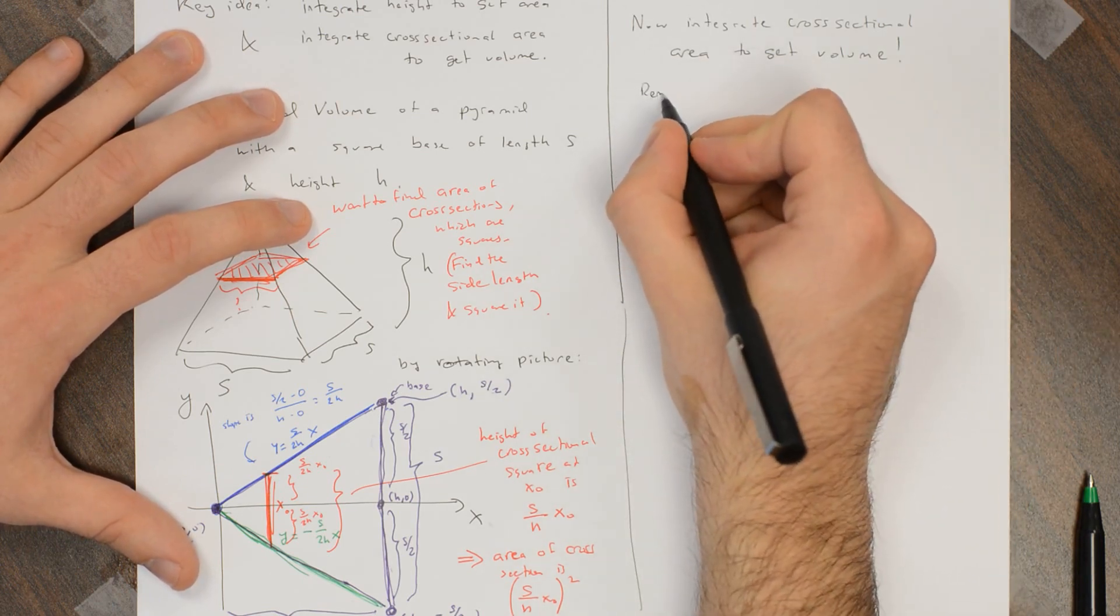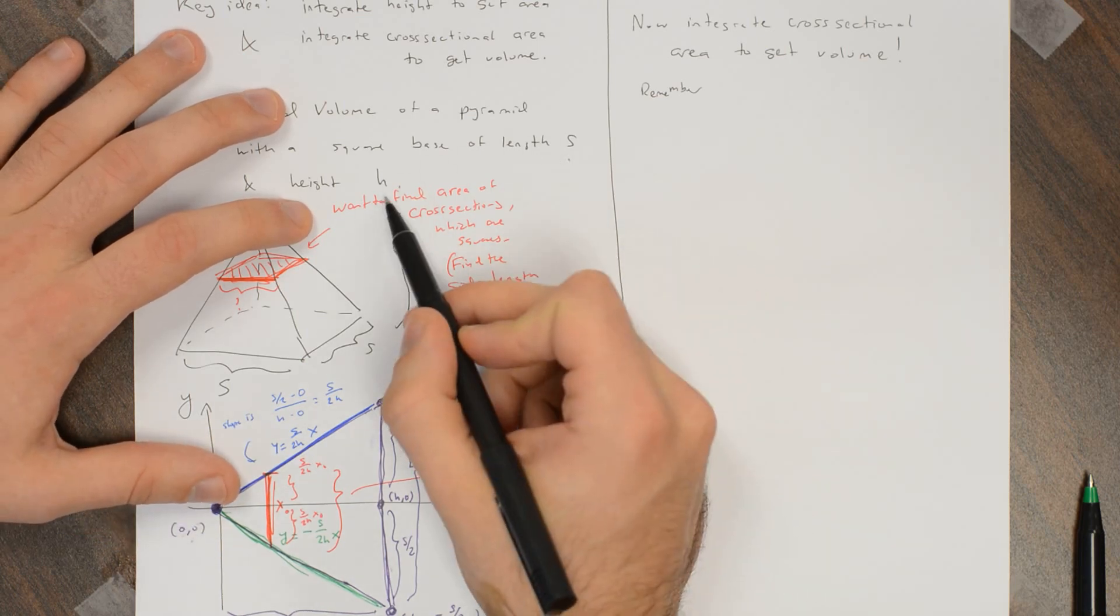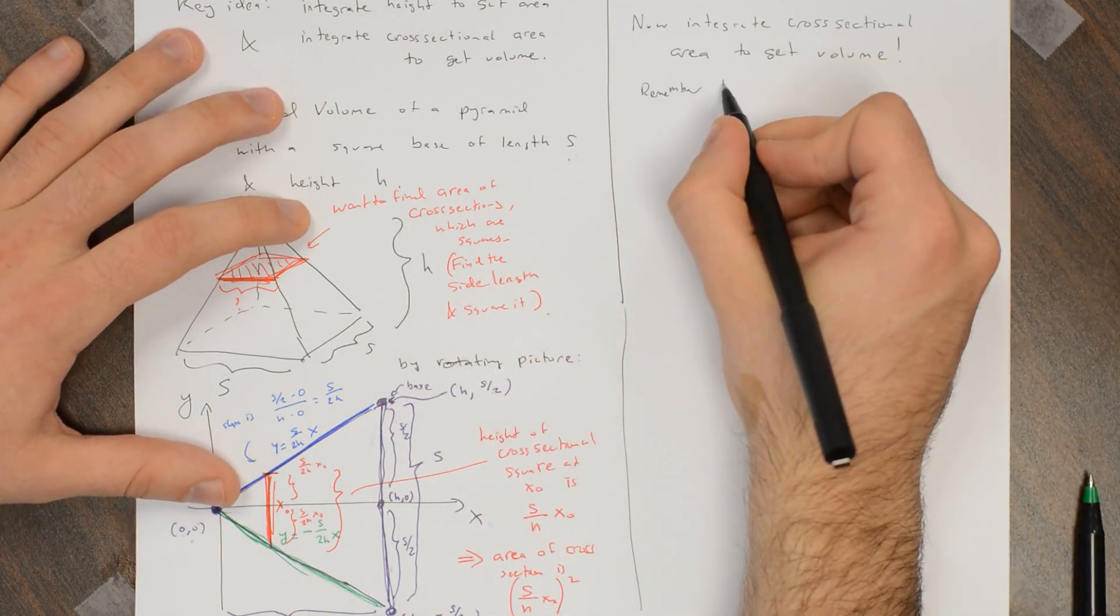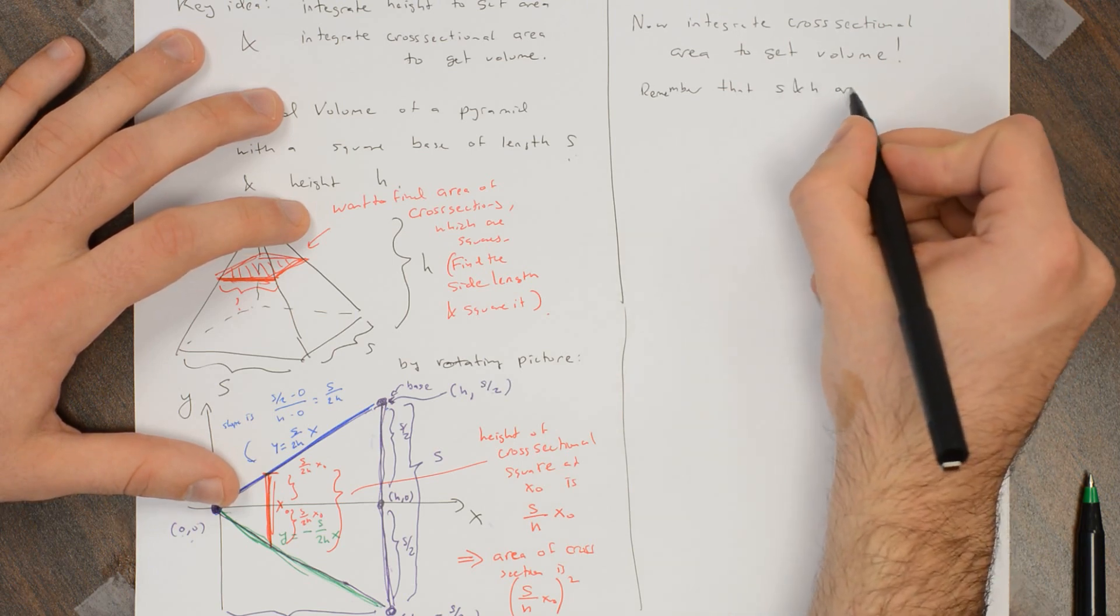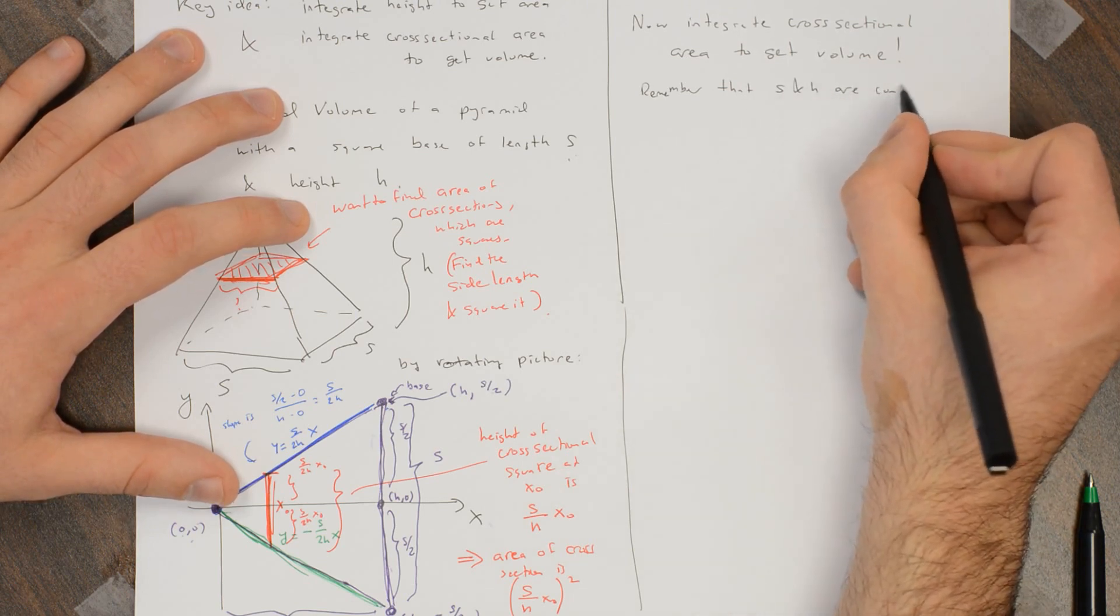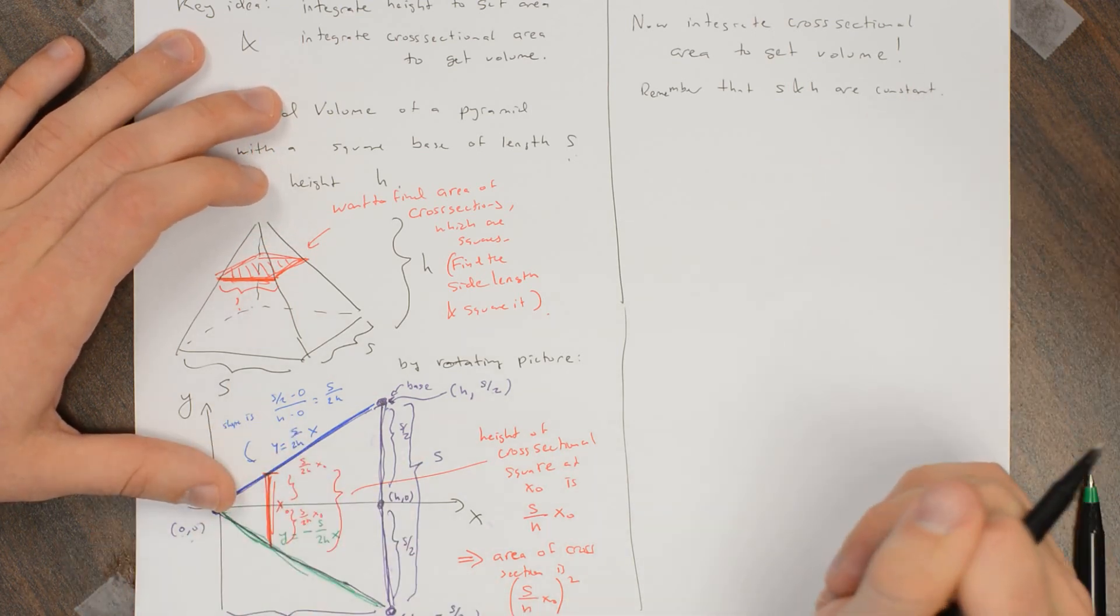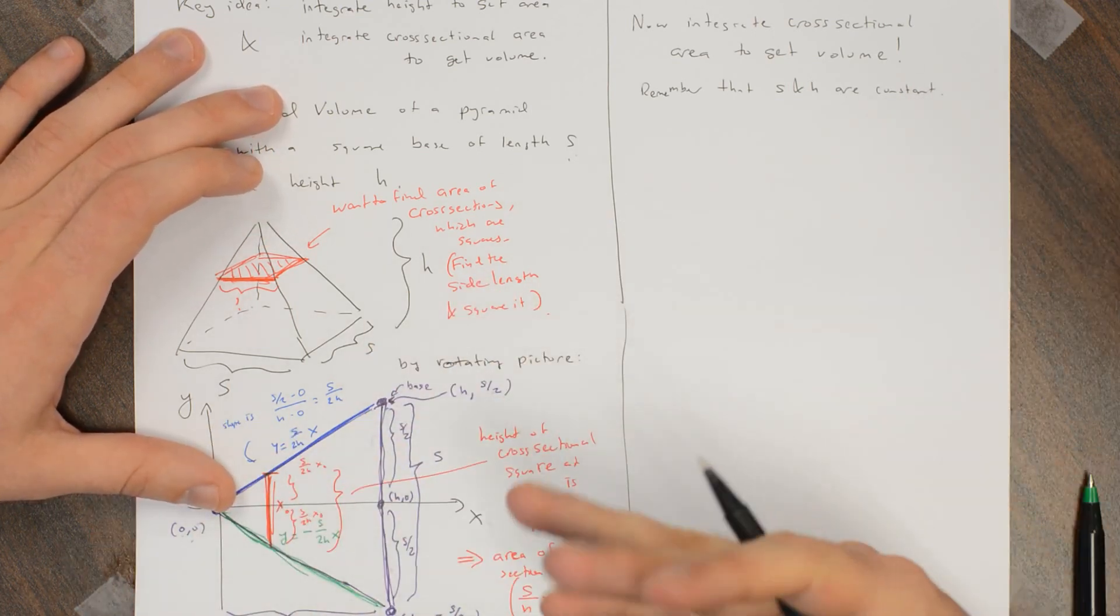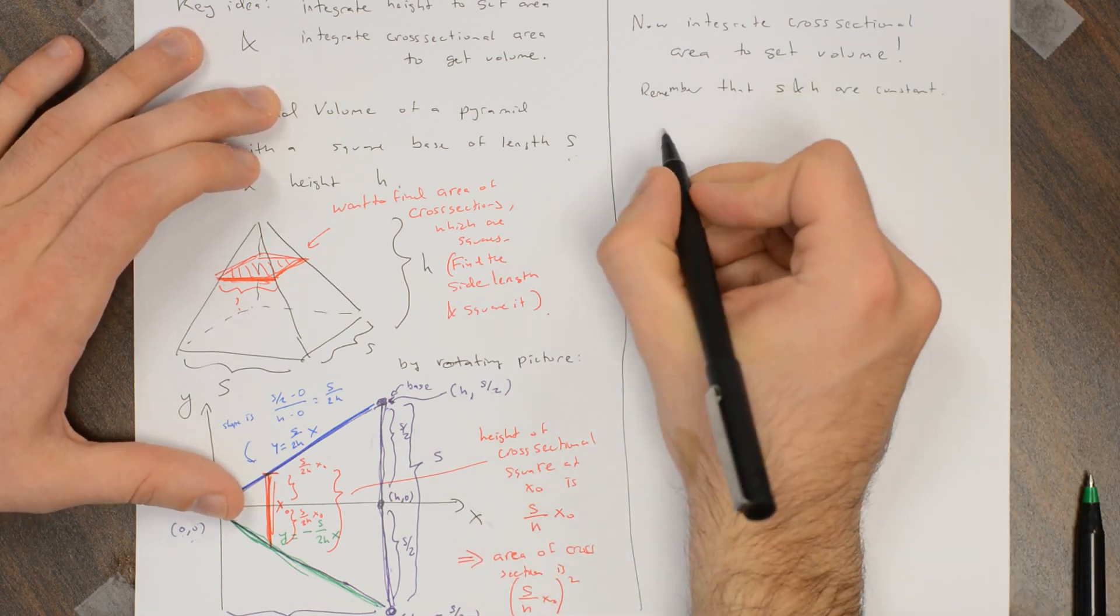So remember that someone ahead of time went out and measured the height of the pyramid and the length of the pyramid. So these letters s and h are constants. The pyramid doesn't change as we're doing this. So these are fixed numbers when we're doing the calculation.